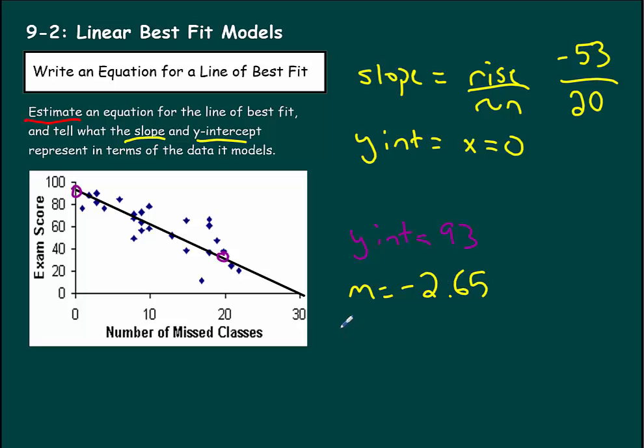So if we're going to write out our slope-intercept form equation, y equals mx plus b. This is m, this is b. So it would be y equals negative 2.65 times x plus 93.